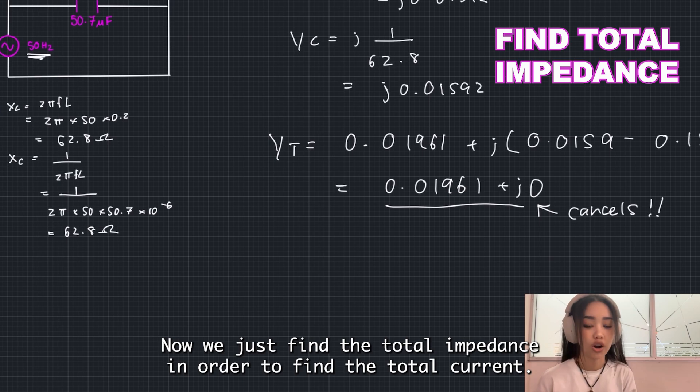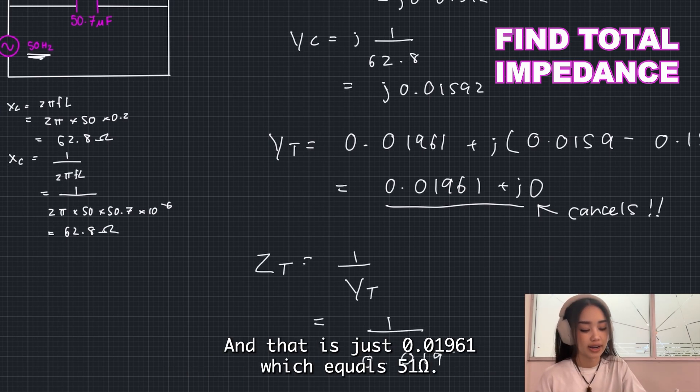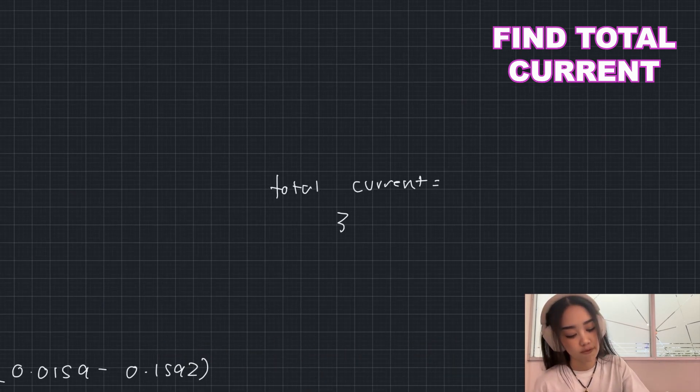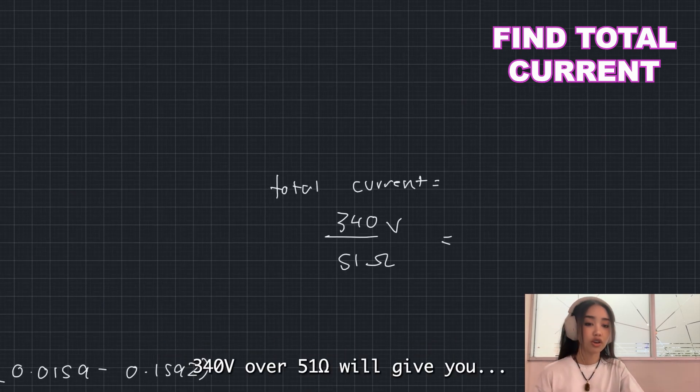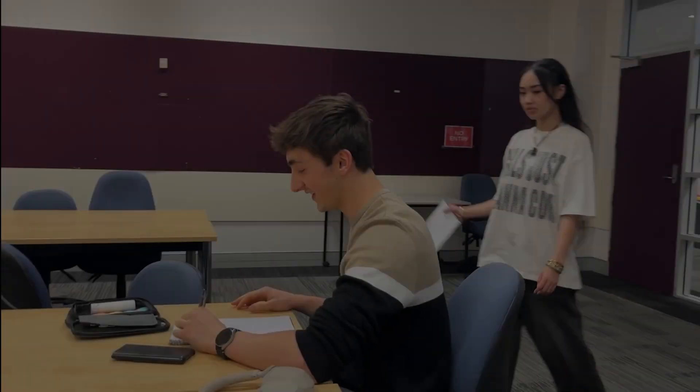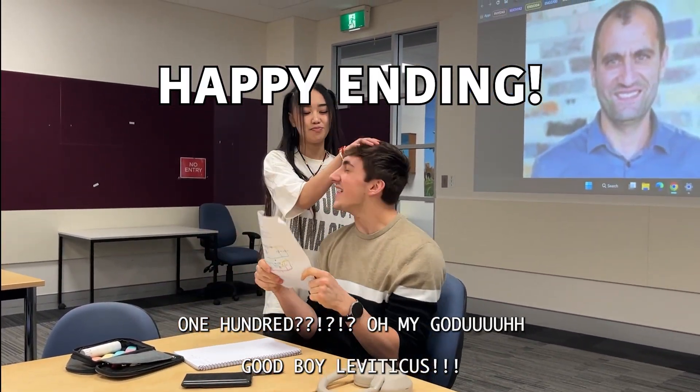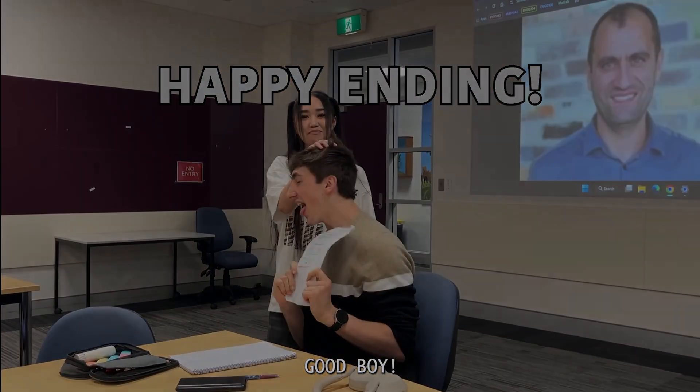Now we just find the total impedance in order to find the total current, and that is just 0.01961, which equals 51 ohms. Now we can finally find total current using Ohm's law. 340 volts over 51 ohms will give you 6.7. Oh, good boy!